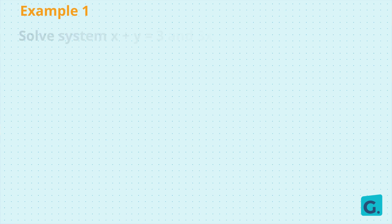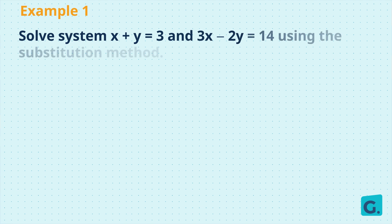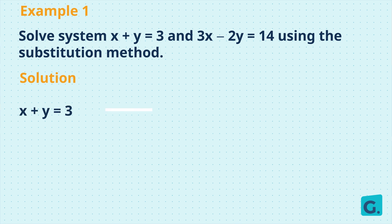Solve the system x plus y equals 3 and 3x minus 2y equals 14 using the substitution method. First, we number the equations. Let x plus y equals 3 be equation 1, and let 3x minus 2y equals 14 be equation 2.